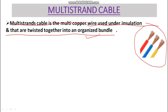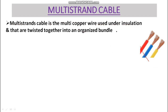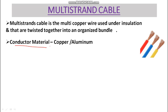As you can see over here, this is the multi-strand cable — there are so many strands of copper wire under the insulation. These multi-wires, or strands, are twisted into an organized bundle. So what are the advantages of this cable over single strand or solid wire?